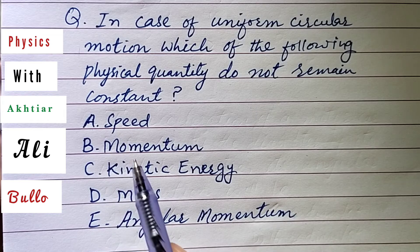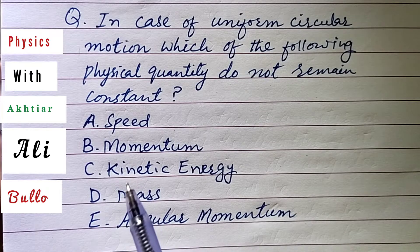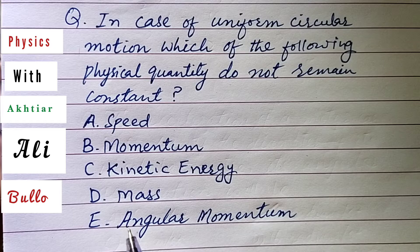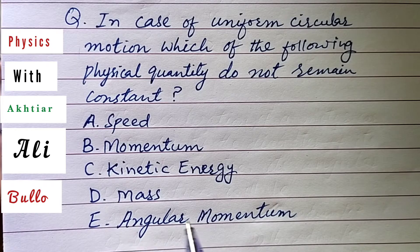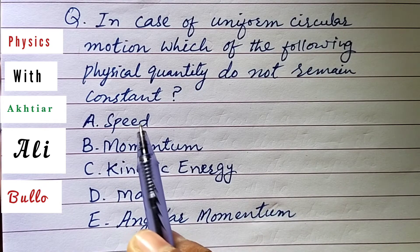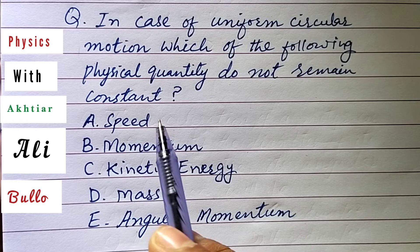Speed, B. Momentum, C. Kinetic Energy, D. Mass, E. Angular Momentum. Speed is a scalar quantity, so it remains constant.